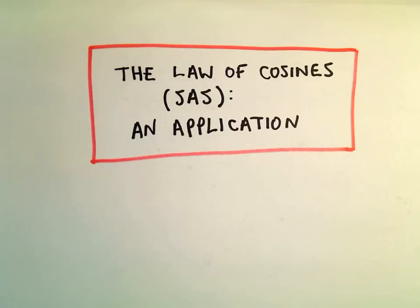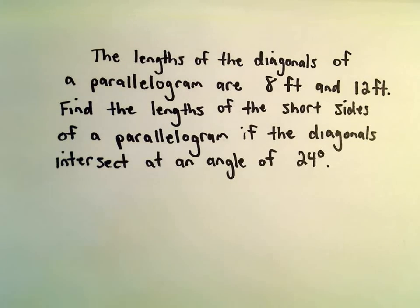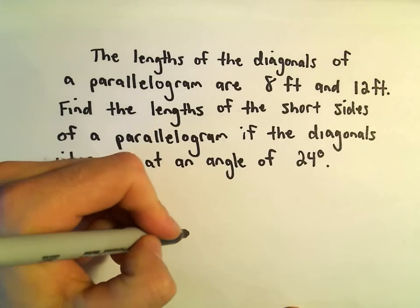Okay, so just one more problem here using the law of cosines. The lengths of the diagonals of a parallelogram are 8 feet and 12 feet. We want to find the lengths of the short sides of the parallelogram if the diagonals intersect at an angle of 24 degrees.